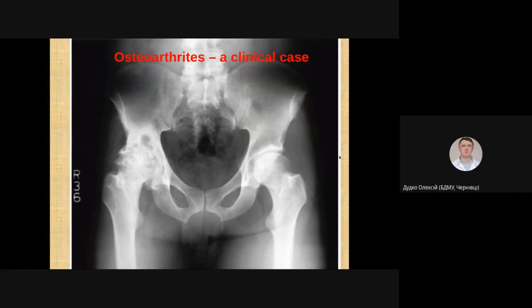Let's take as an example a hip joint. We can see left and right hip joints with different stages of osteoarthritis. Let's start from the right side.